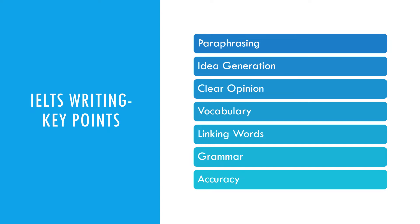The next is idea generation. The first thing that comes into your mind could be your best idea. Ideas must be relevant instead of exceptional — there is no marking for excellent ideas, only for relevant ones. Make a clear opinion that does not need to be your personal view. For example, choose one side to agree with and the other to disagree in discussion essays. Choosing an in-between opinion would make it complicated and difficult to score well.